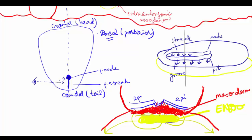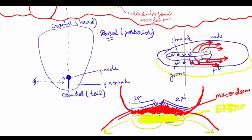The mesoderm is divided into three parts: there's the paraxial mesoderm, there is the intermediate mesoderm, and there is the lateral plate mesoderm, and they all give rise to different things. The same applies on the other side, and as mentioned, it spills out over the edge of the embryonic disc, coming from the primitive streak all the way out to meet with the extra-embryonic mesoderm.